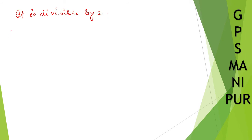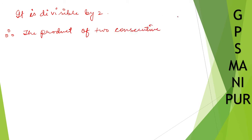Therefore, the product of two consecutive integers is divisible by two.